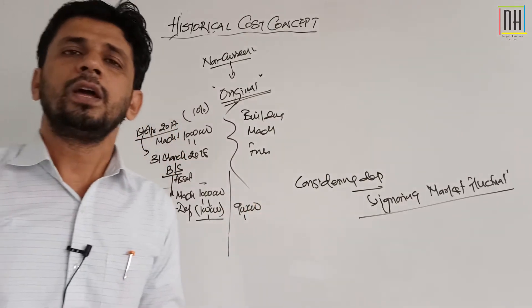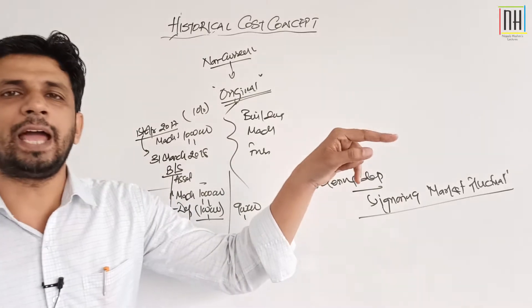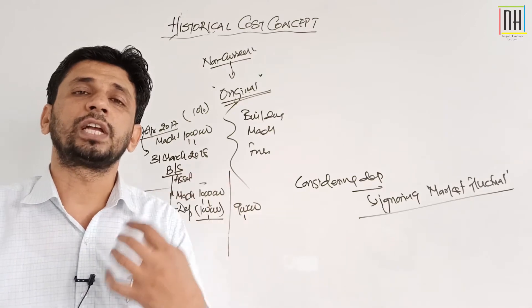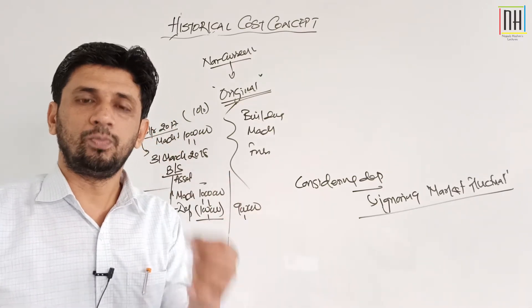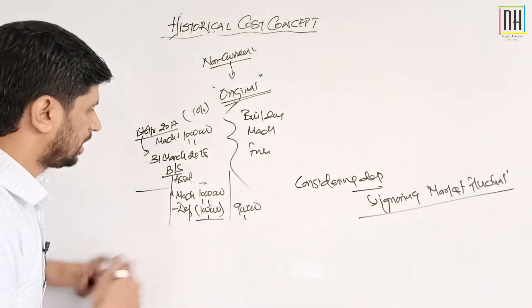Today the value of machine is rupees 9 lakh. Actual cost was rupees 10 lakh, aur us par humne 1 lakh rupees ka depreciation charge kar diya, which is a loss, which is the consumption of the fixed capital. After deducting that value, present value of that machine is rupees 9 lakh.